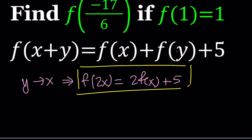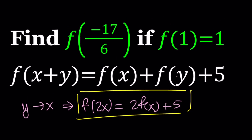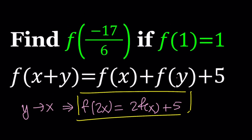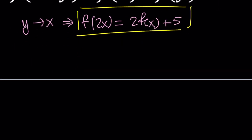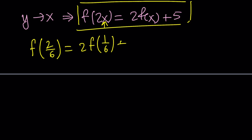Let's go ahead and start with 1 over 6. The reason behind that is I'm trying to evaluate f of negative 17 over 6, which has a 6 in the denominator, and 1 can be obtained by adding 1 over 6 six times. I'm going to start with f of 2 over 6 — I don't know what it is, but I'm just going to write it using this formula. Replace x with 1 over 6: that's going to be 2 times f of 1 over 6 plus 5.